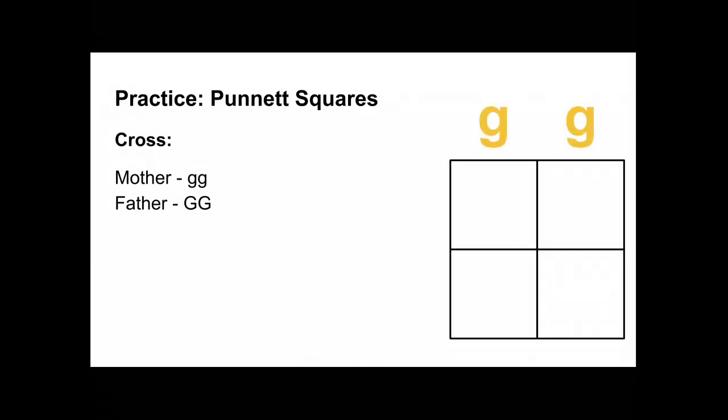Mom's alleles go on the top, dad's alleles go on the side. We're gonna drop mom's alleles down in both columns. Move dad's alleles across in both rows.